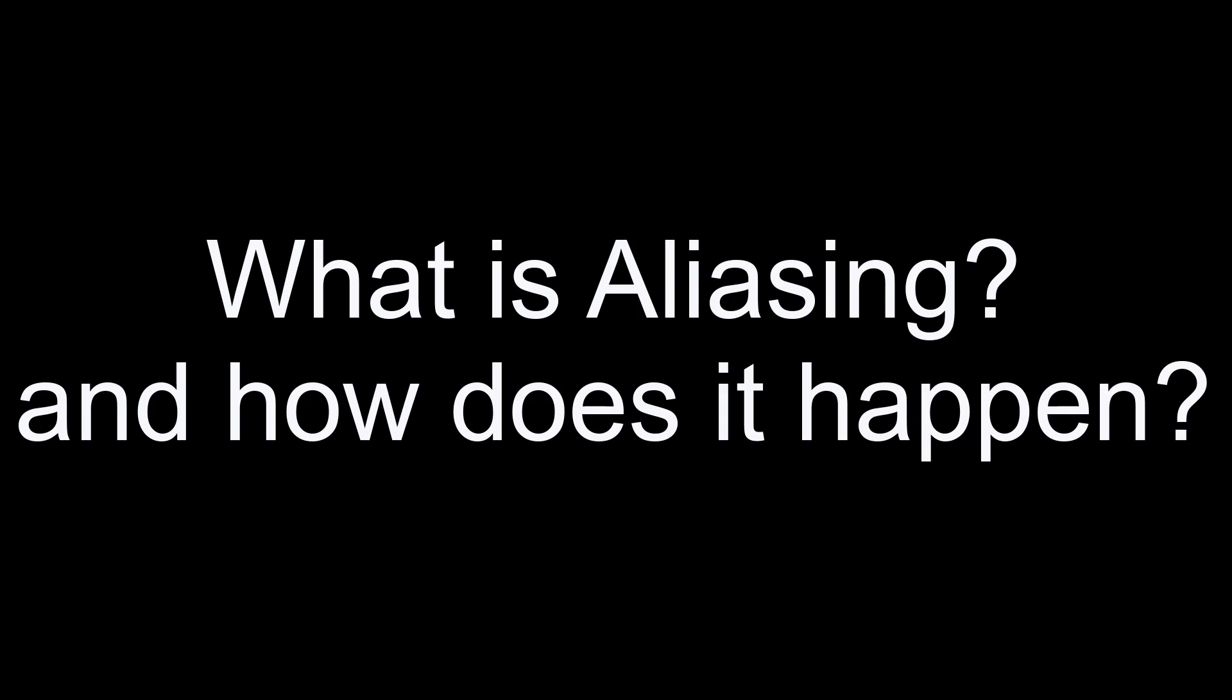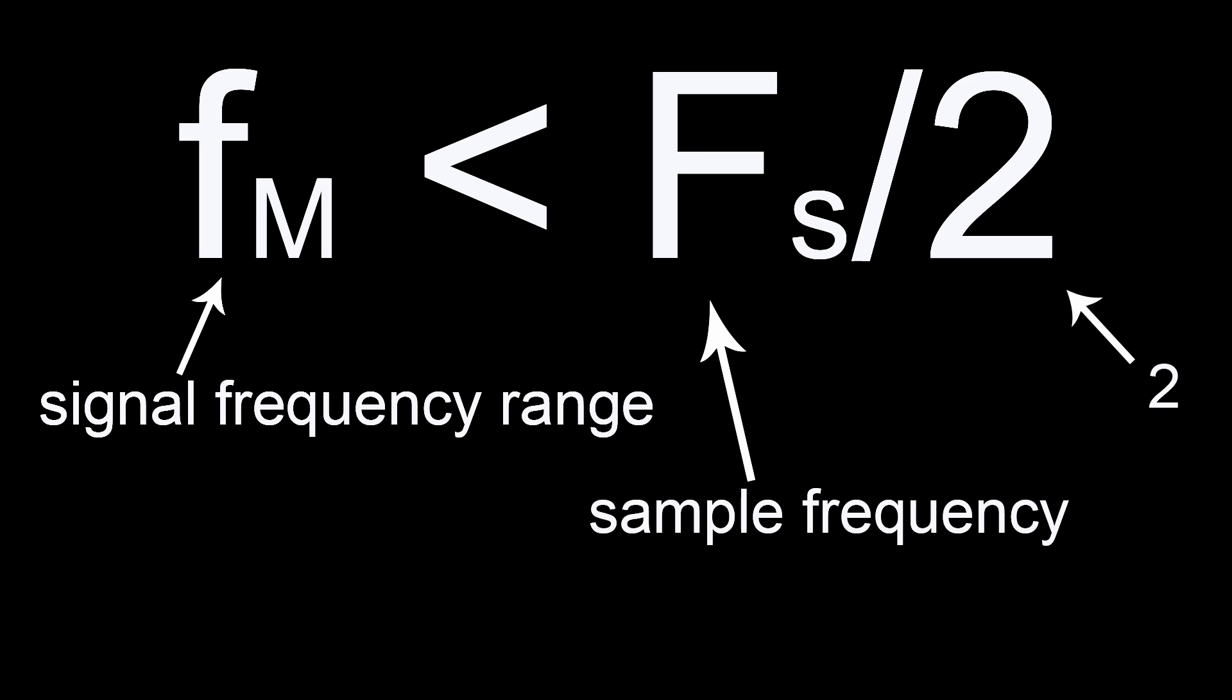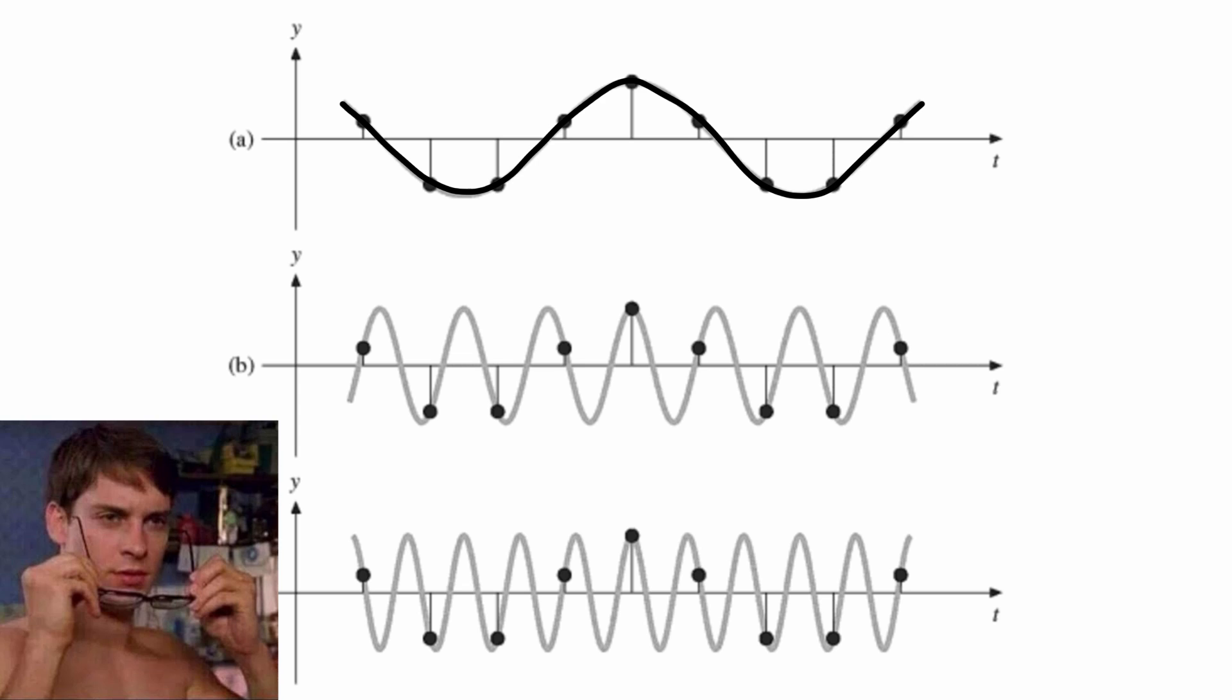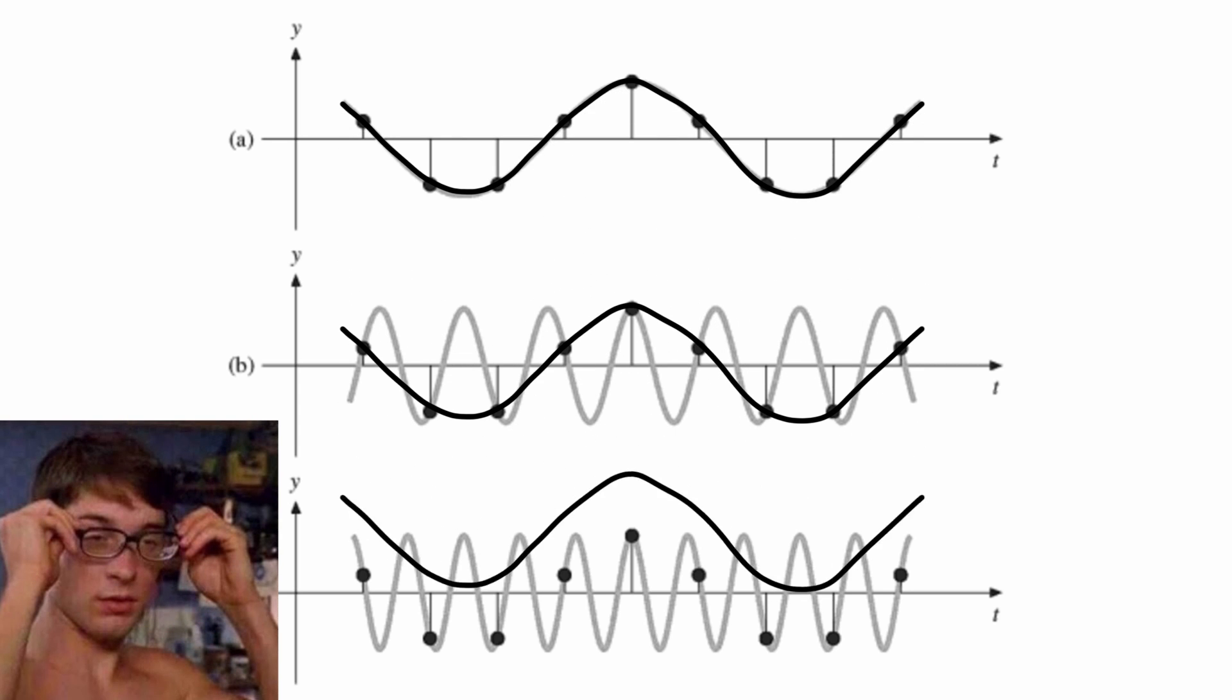Aliasing happens when the sampling theorem isn't satisfied. If you sample too slow, your signal can start looking like another one with lower frequency. It turns out there are an infinite number of signals that will look the same when sampled at a particular rate.